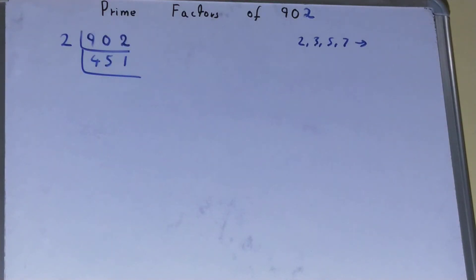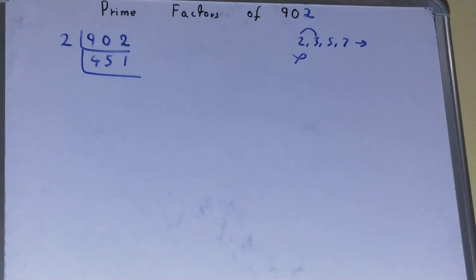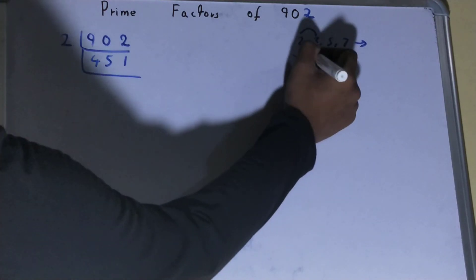Now is this 451 divisible by 2? The answer is no, it is an odd number. So we will be going to the next lowest prime number, that is 3. Is it divisible by 3? 3 times 15 is 45, 1 left. No, it is not divisible by 3.